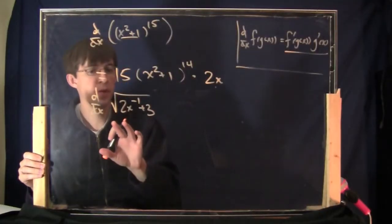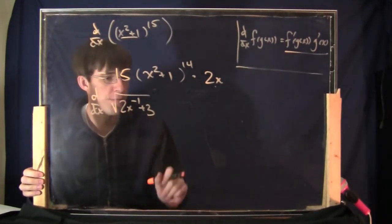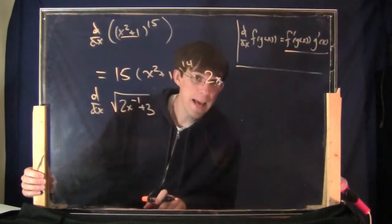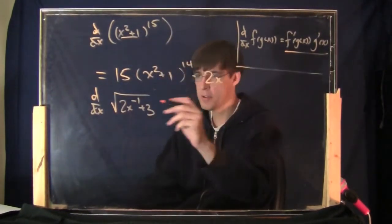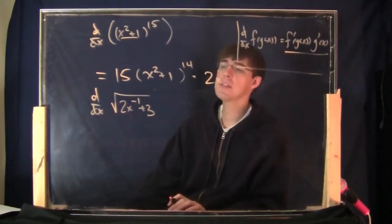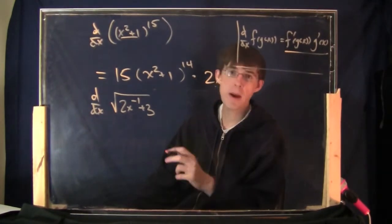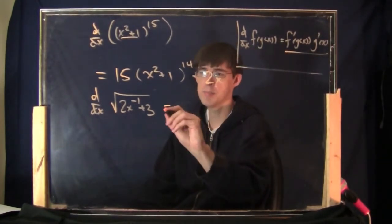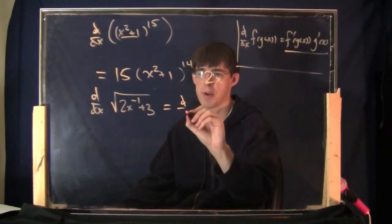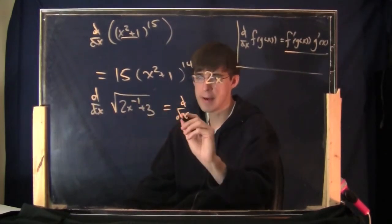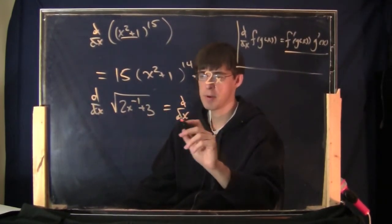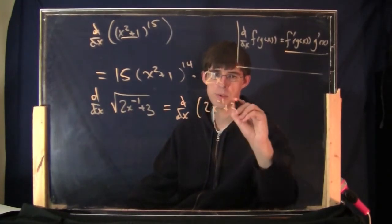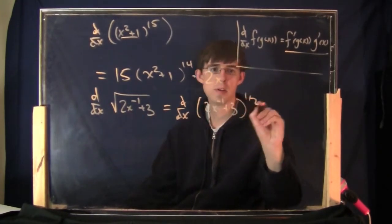How about the derivative of the square root of 2x to the minus 1 plus 3? As always, you should rewrite the square root as a one-half power — it is basically never helpful to write a square root with the radical sign. Use the one-half power. So that's going to be 2x to the minus 1 plus 3 to the one-half.